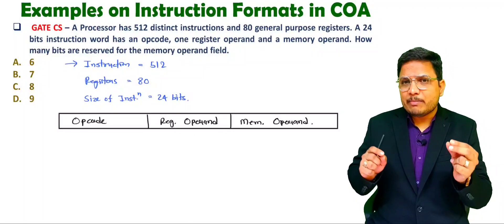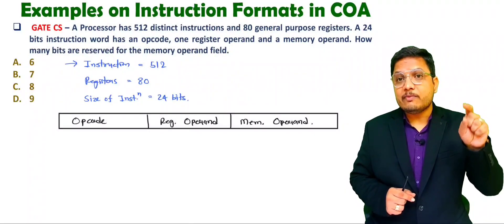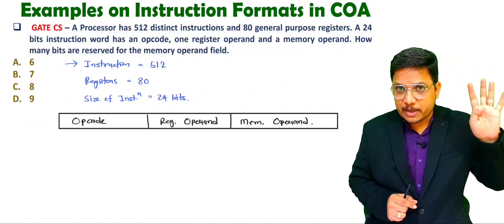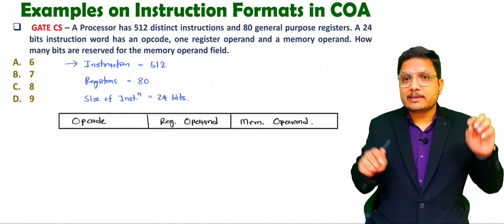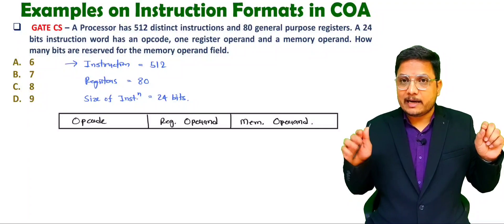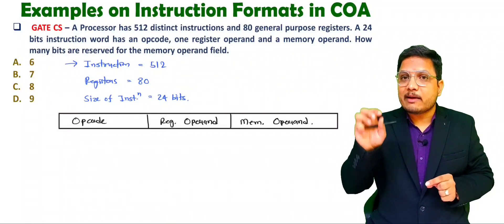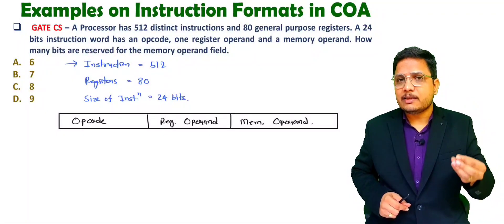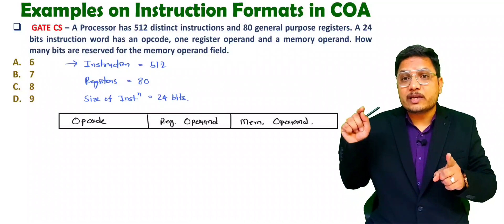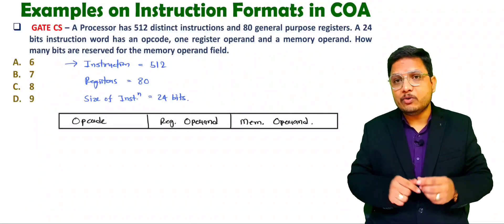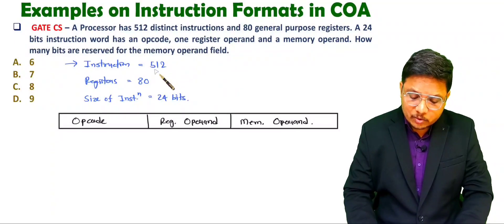Sometimes there can be a bit of a trick in the question. For example, if I ask you how many bits are needed for 25 instructions — with 16 you need 4 bits and with 32 you need 5 bits. So between 17 and 32 you need 5 bits. If you have 25 instructions you need 5 bits. Similarly, if there are 50 instructions, from 33 to 64 you need 6 bits. So with 512 directly we can say 2 to the power 9 equals 512.